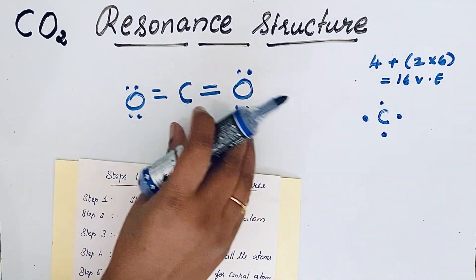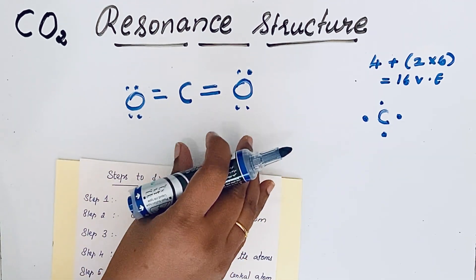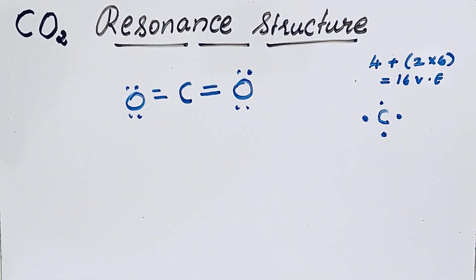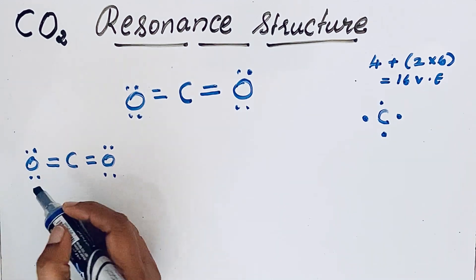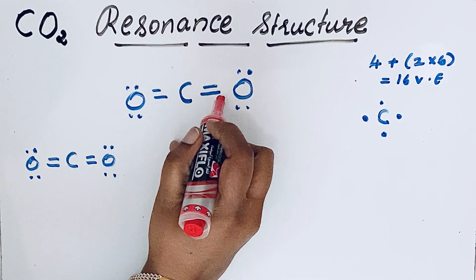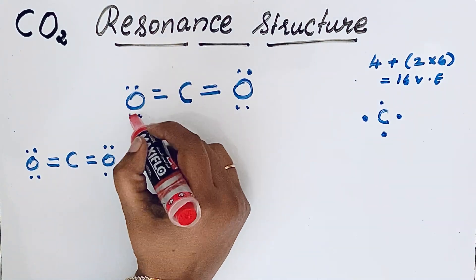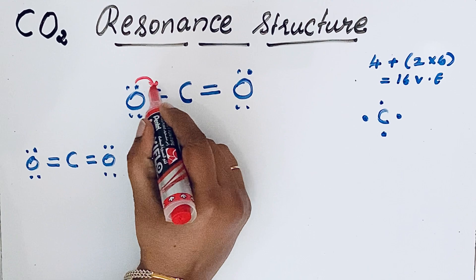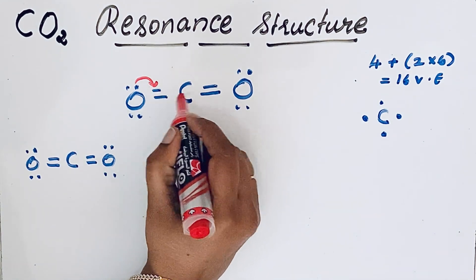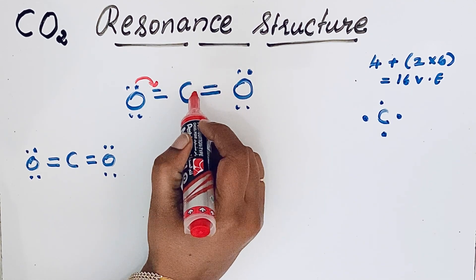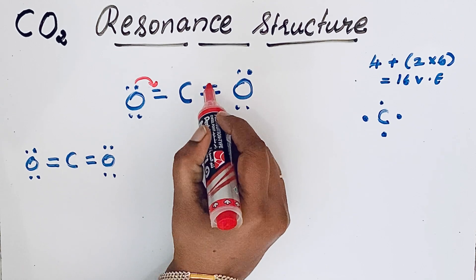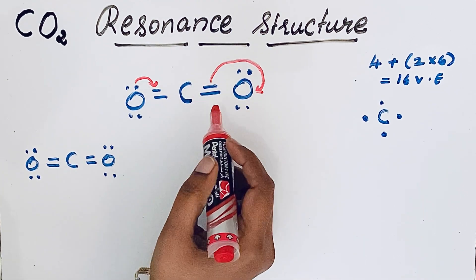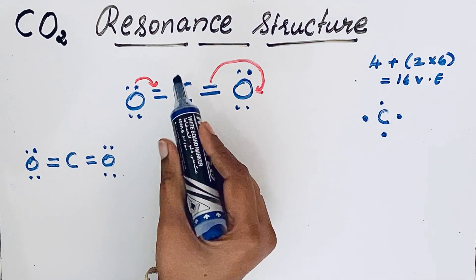Now let's write the other resonating structures. During resonance, electrons can move from one place to another. The oxygen atom is electron-rich because it has two lone pairs. One lone pair on oxygen can form a new bond with carbon. However, this gives carbon 10 electrons, which violates the octet rule. So to compensate, the existing double bond breaks and forms a lone pair on the other oxygen.